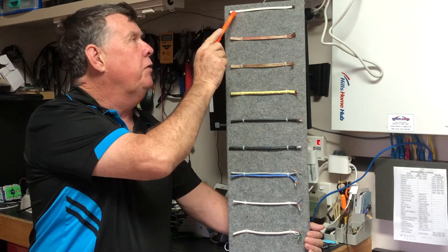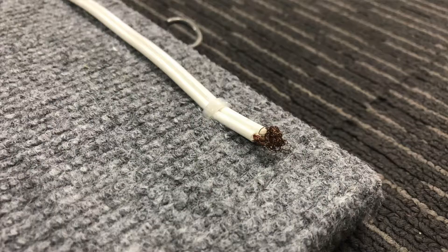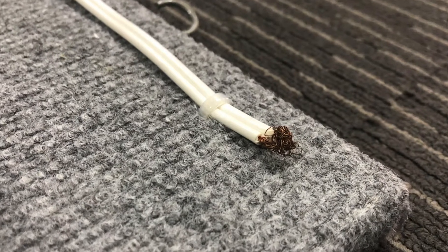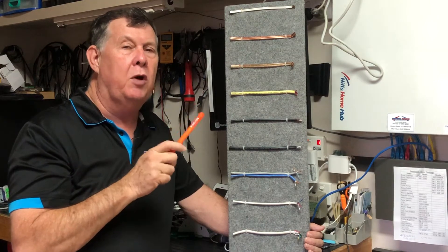This first one here is called figure 8, and the reason it's called figure 8 is if you look at the end profile it looks like the number 8, but this is a multi-strand. This one here is actually 24-020, and what that basically means is there's 24 strands at 0.020 per strand.